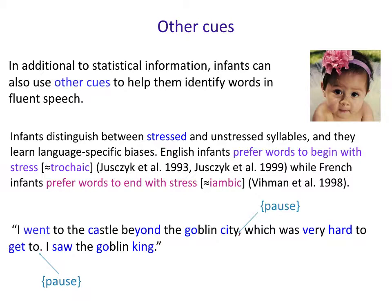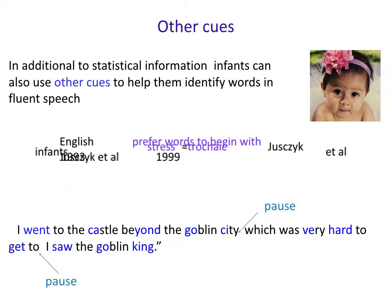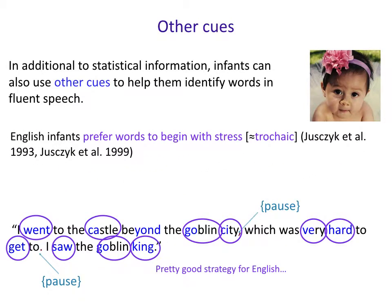These are biases that infants use when they get a fluent stream of speech to figure out where the words are. For example, English infants will prefer words to begin with stress. So if they are sticking a word boundary before a stressed syllable, they're going to identify words like 'went', 'castle', 'goblin', 'city', and 'very hard'. These are the words they're going to be picking out by using this strategy.